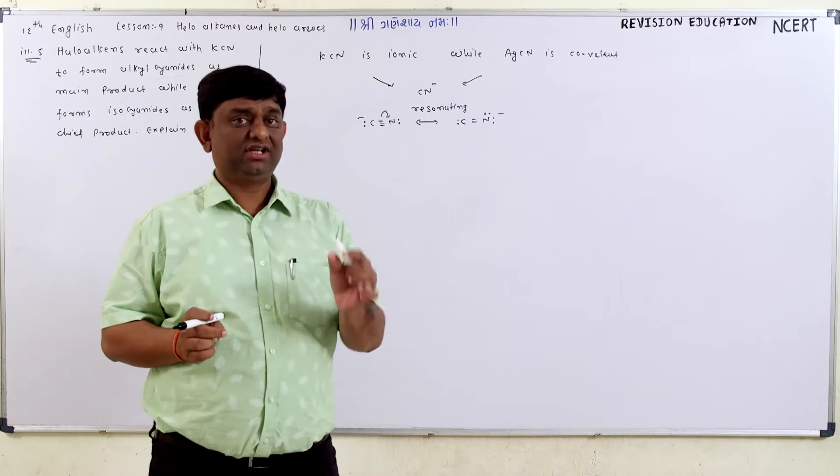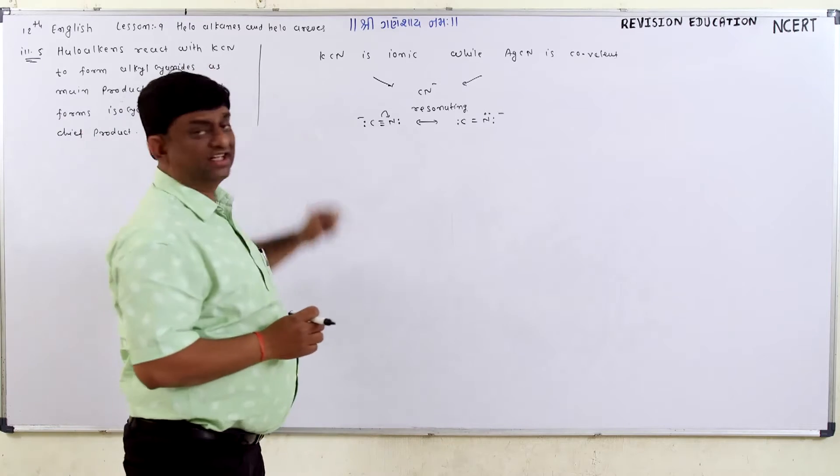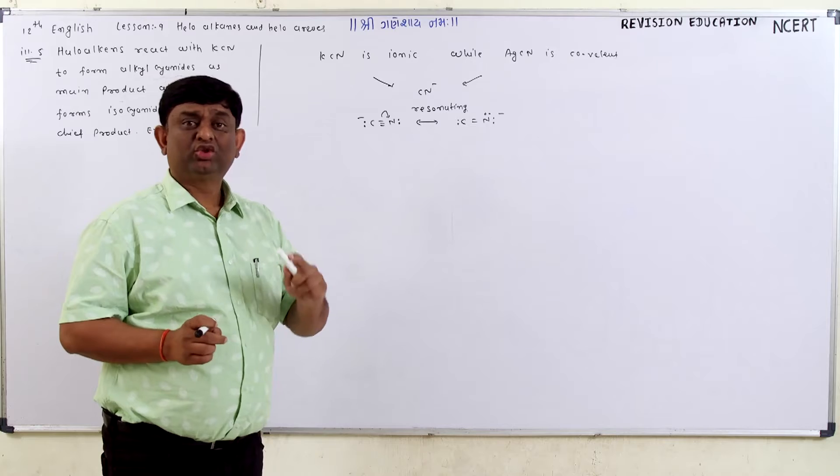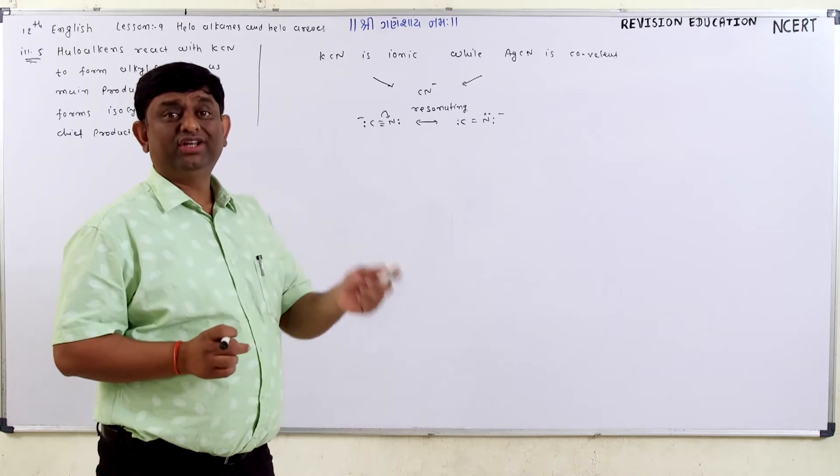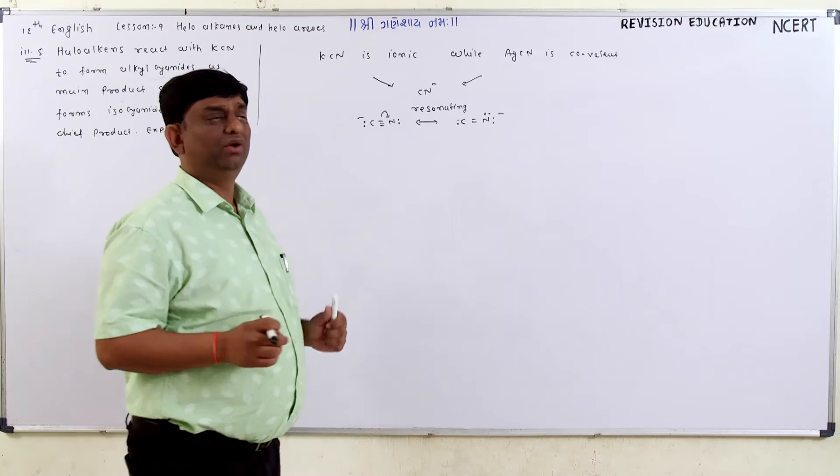If KCN is the reactant, it will be a cyanide compound. If AgCN is the reactant, it will be an isocyanide. How do we have to explain?